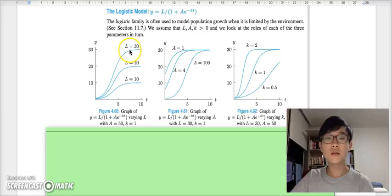The opposite thing happens in figure 4.61. When the value of A varies, although the endpoint is fixed, the starting point differs. This is because when we compute 0 in the t value, we get y = L/(A+1). Therefore, A influences the starting point.